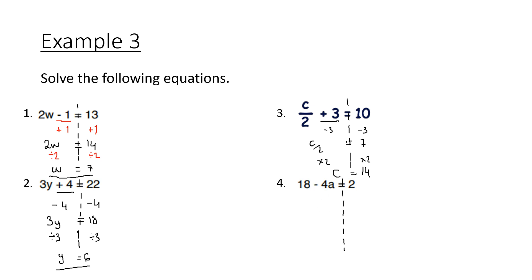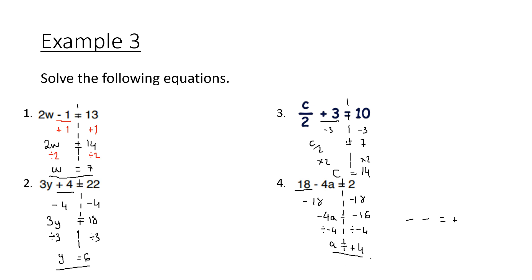Example 4: 18 minus 4a equals 2. You'll see this looks slightly different, but treat it the same way — do the adding and subtracting first. We have a positive 18, so the opposite is negative: subtract 18 from both sides, leaving minus 4a equals minus 16. Then minus 4 times a — opposite of times is divide — so divide both sides by 4. We get a double negative: 16 divided by 4 is 4, and negative divided by negative gives positive. So a equals 4.